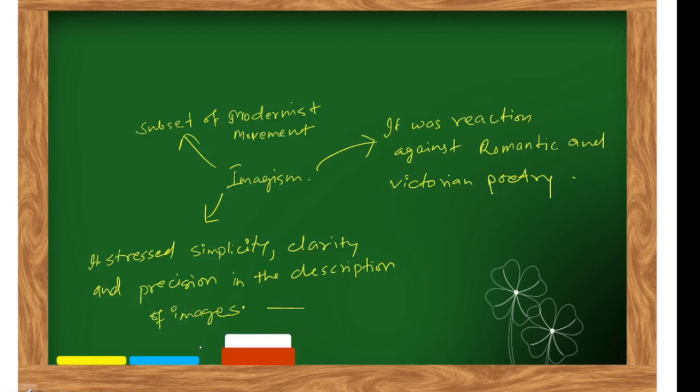Hello everyone, welcome to West North's tutorial. Today's topic is Imagism. Imagism was a subset of modernist movements, a part of modern English literature. It was a reaction against Romantic and Victorian poetry. It stressed simplicity, clarity, and precision in the description of images, which is why it's called Imagism.